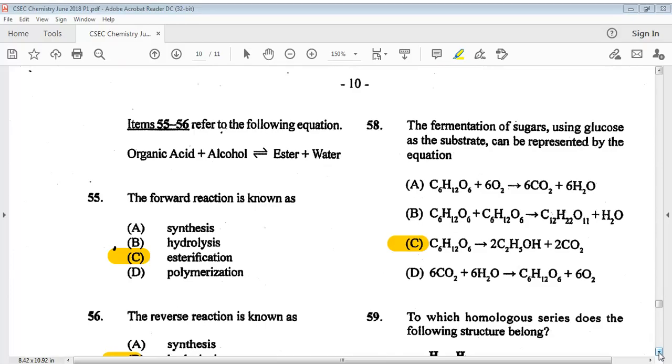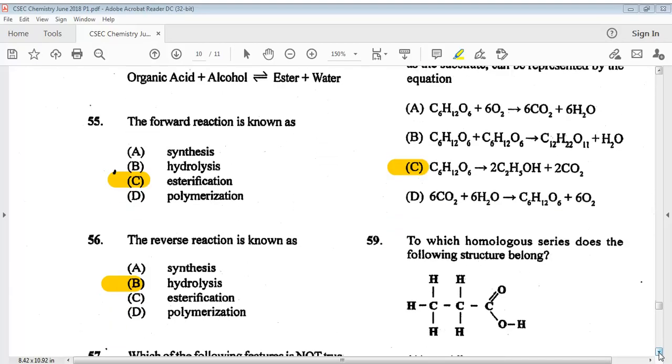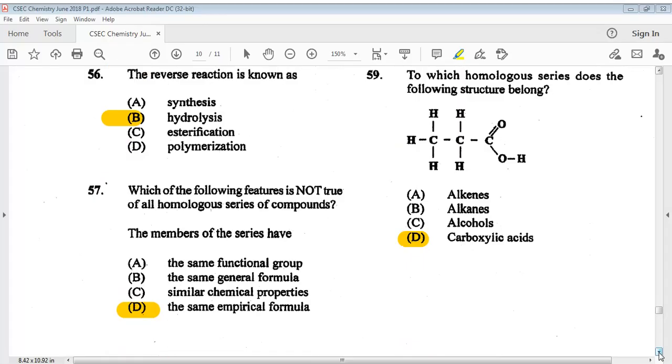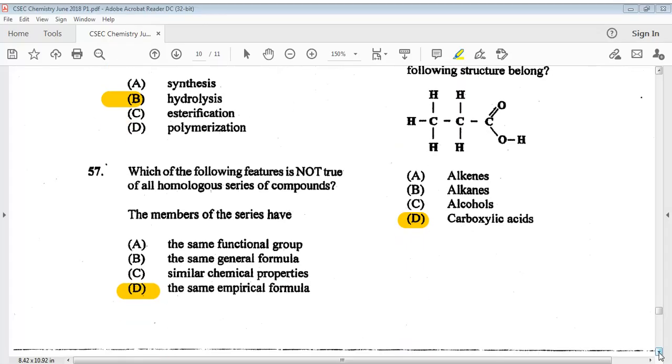Question fifty-five. Items fifty-five to fifty-six refer to the following equation. Question fifty-five: the forward reaction is known as? The answer is C, esterification. Question fifty-six: the reverse reaction is known as? The answer is B, hydrolysis. Question fifty-seven: which of the following features is not true of all homologous series of compounds? The members of the series have? The answer is D, the same empirical formula.